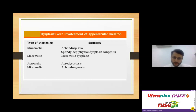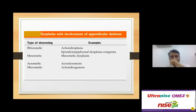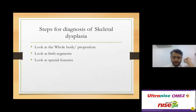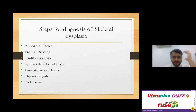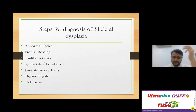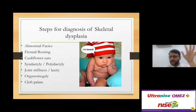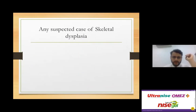Common rhizomelic dysplasias include achondroplasia and spondyloepiphyseal dysplasia. Mesomelic dysplasias have various forms. Acromelic dysplasias are known as acrodysplasias. Look at body and limb segments to get a diagnostic pointer. Also look at special features: frontal bossing, cauliflower ears, hand deformities, joint stiffness, organomegaly, and systemic features — at which point the orthopedic surgeon says 'show me the X-rays.'